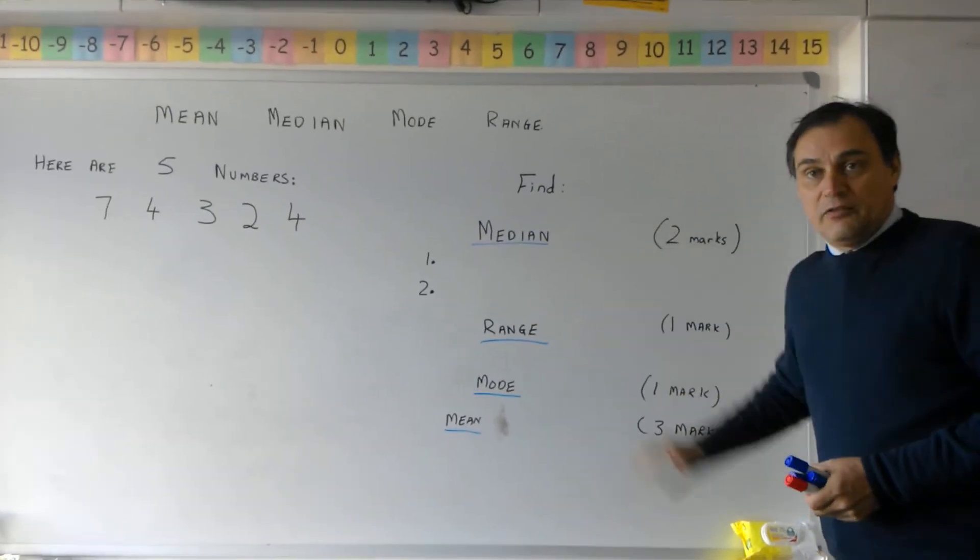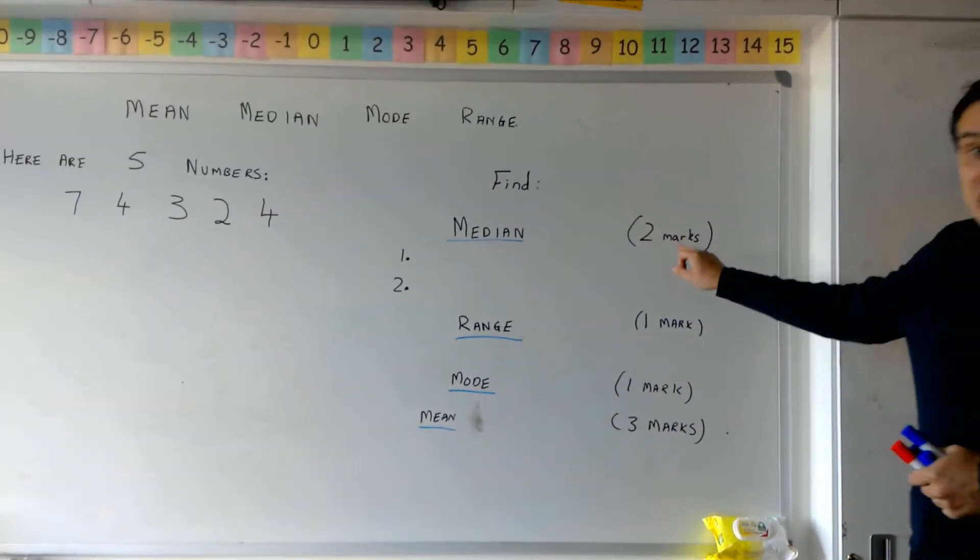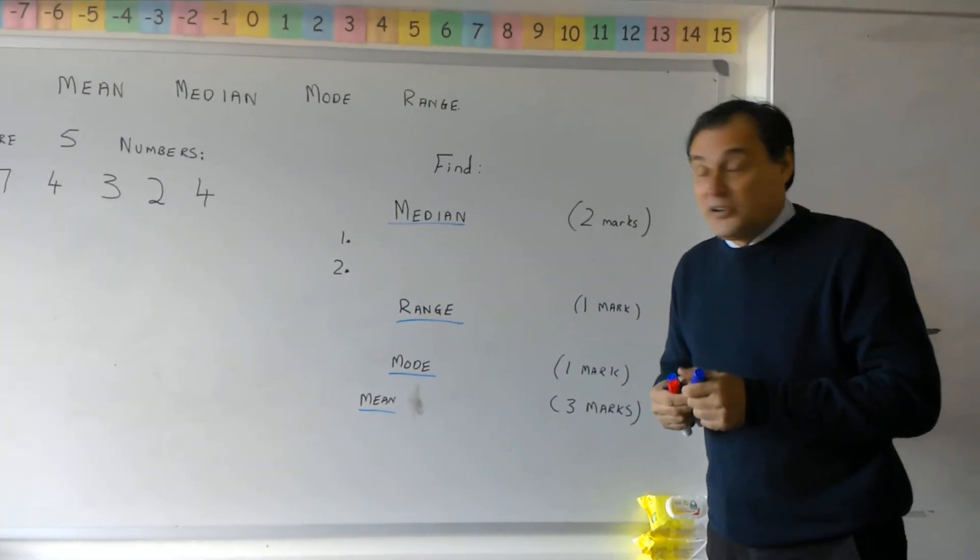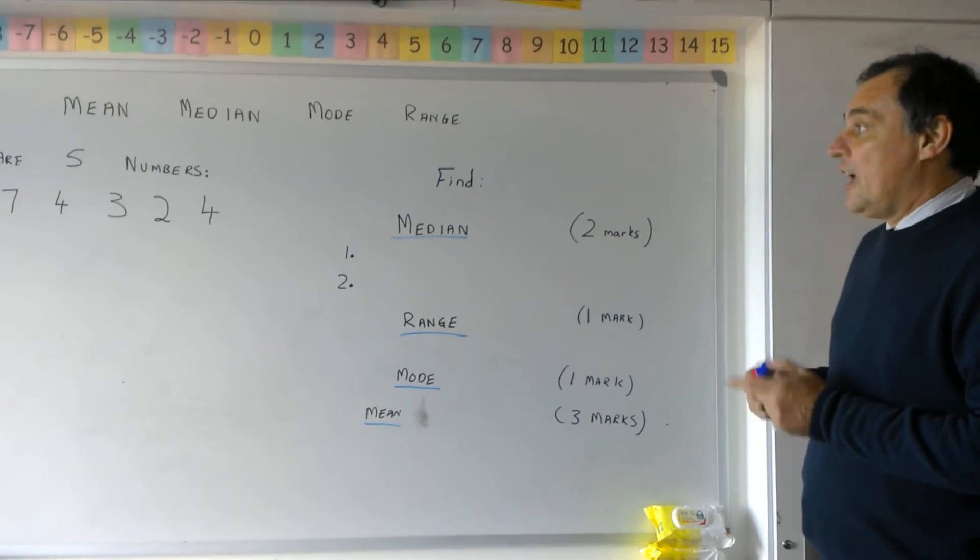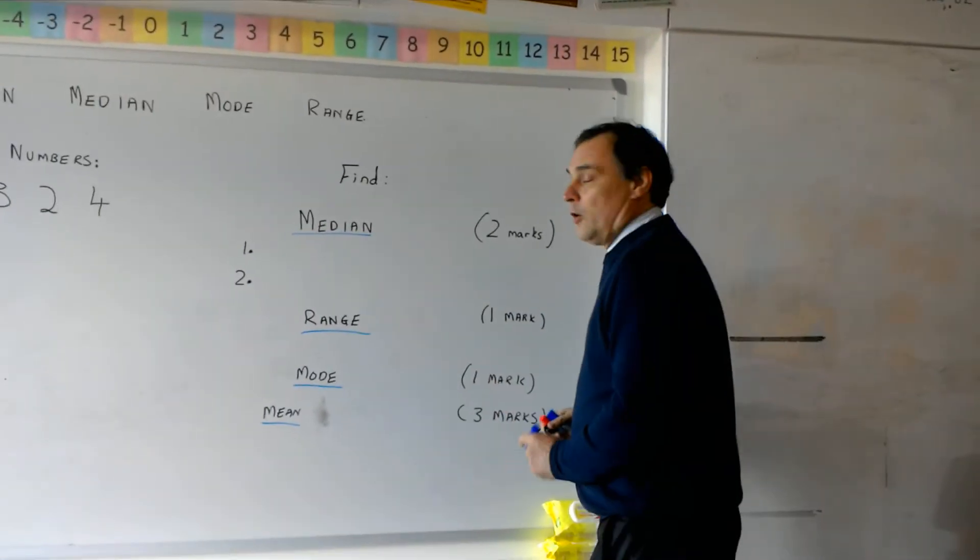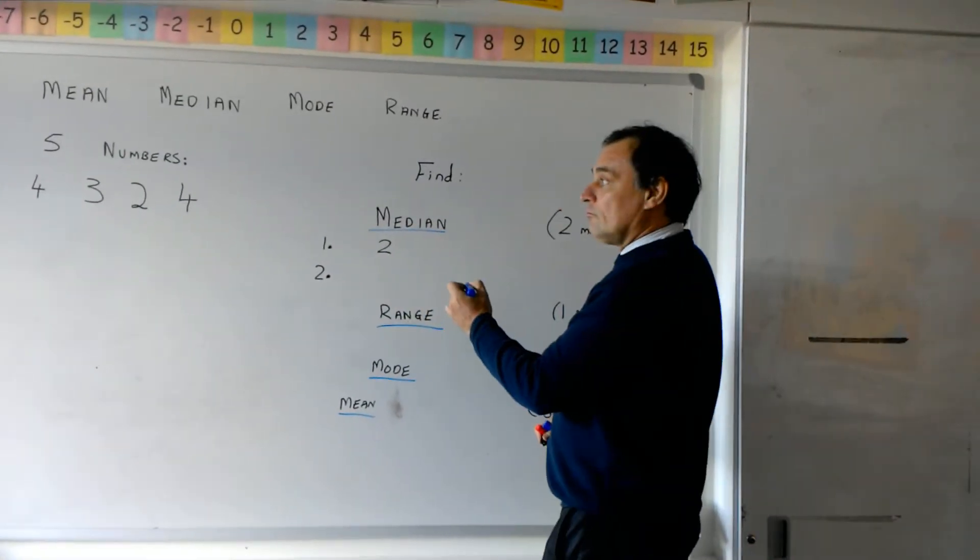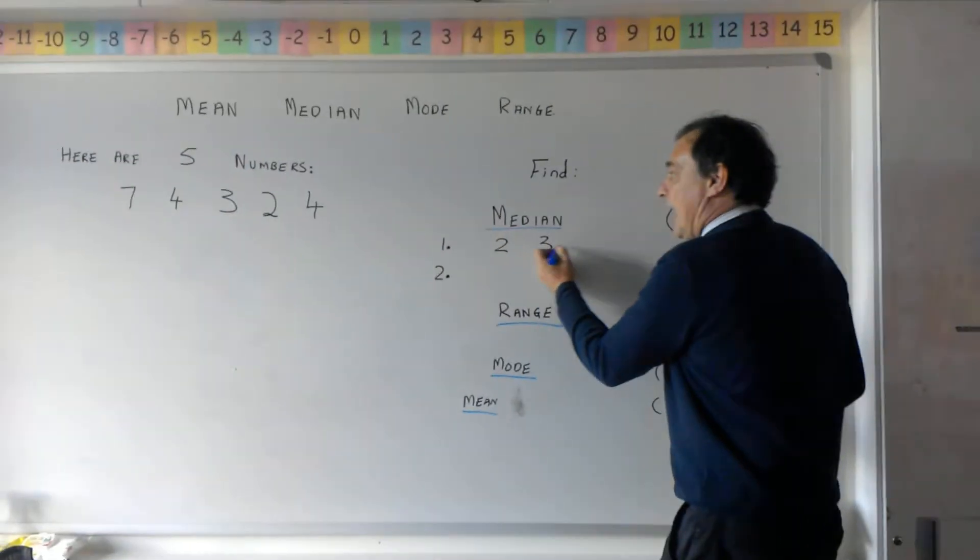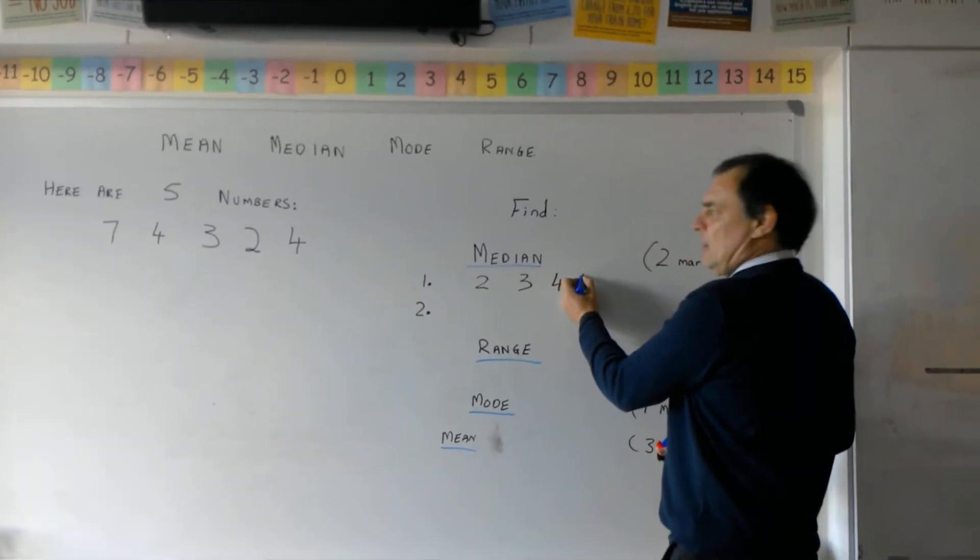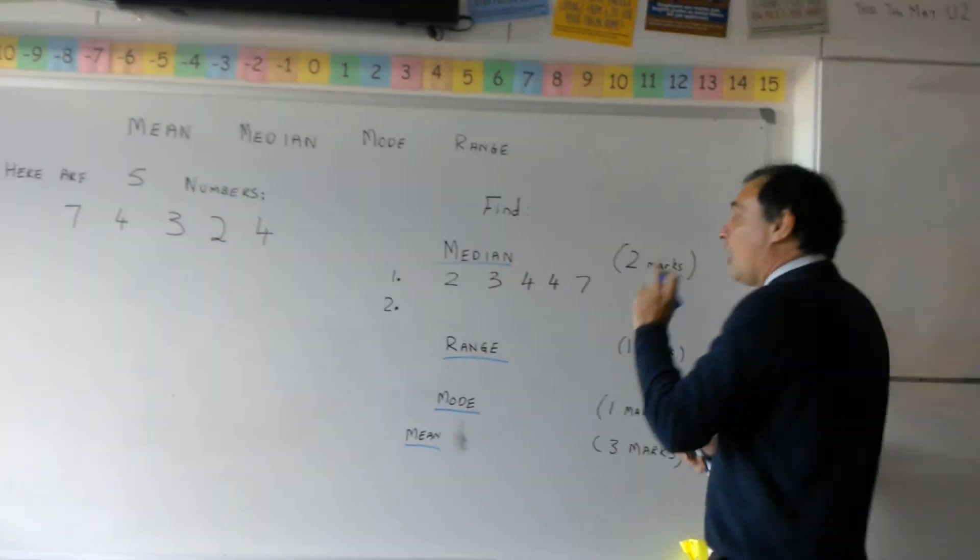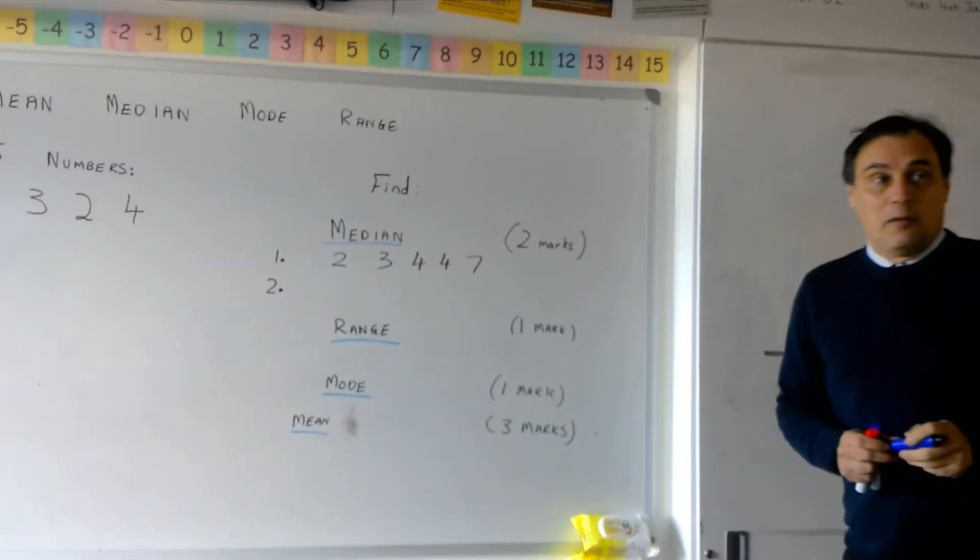We've got to find the median of them. Now if you notice when you do median you normally get two marks for the question. That means you've got to do two jobs. The first job we've got to do is to put them in order. So who can tell me what the smallest number is please? Two. Well done. And then? Three. And? Four. And? Seven. Another four. We've got to write two fours and a seven. So our first job is to put them in order.